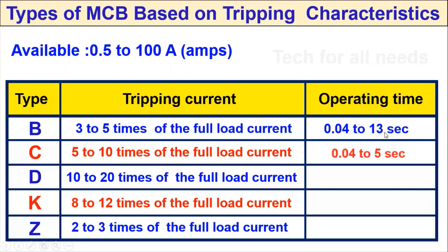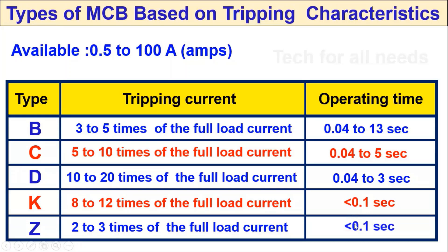C type operating time is 0.04 to 5 seconds. D type operating time is 0.04 to 3 seconds. K type operating time is 0.1 seconds.